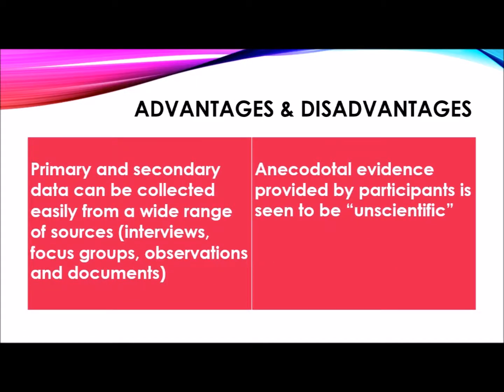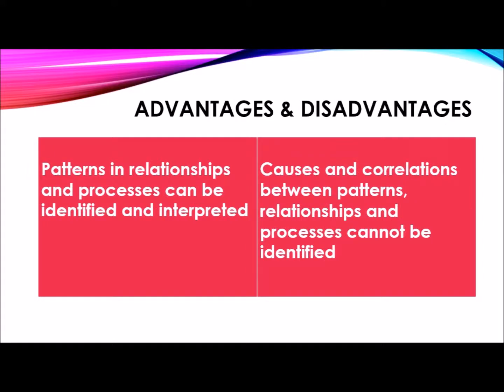One of the advantages of using a case study design is that we can usually easily collect data from a wide range of sources, including primary and secondary data from interviews, focus groups, observations and documents. However, all this anecdotal evidence that we collect may seem to be unscientific, may not be rigorous and robust enough. When researchers use case studies as a research design, they often look for patterns in relationships and processes that can be identified and interpreted. However, we can't look for causes and correlations between these patterns or relationships and processes — we can only establish the patterns, but not what's actually causing them.